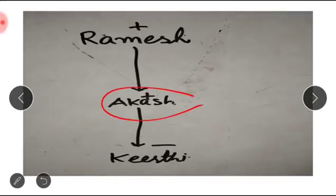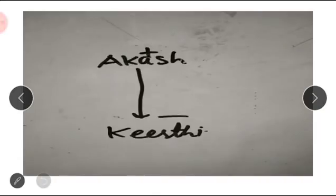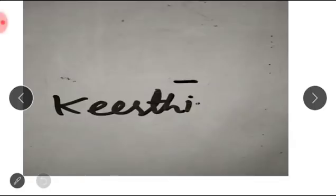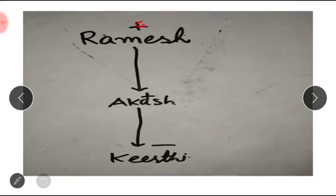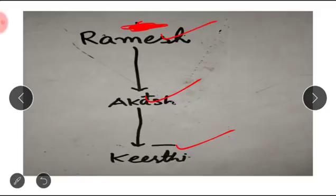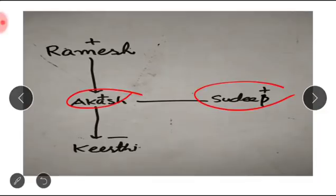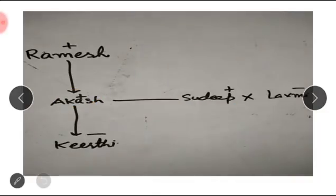Aakash is the son of Ramesh. So we have Ramesh at the top. Kirti is the daughter of Aakash, and Aakash is the son of Ramesh. Aakash's brother is also the son of Ramesh — that brother is Sudeep. Sudeep's wife is Lakshmi. Lakshmi is female and Sudeep is male.